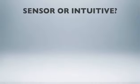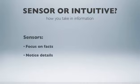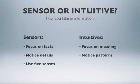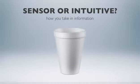The second facet, sensing-intuition, describes how you take in information about the world around you. Sensors focus on facts and details and take in information using their five senses. Intuitives focus on meaning, interpretation, and possibilities, and take in information using their intuition. So how do you tell if you're a sensor or an intuitive? Let's try an exercise. Take a look at this cup. Think for a few moments about how you might describe it. If you have a pen and paper, write down a few words to describe the cup.